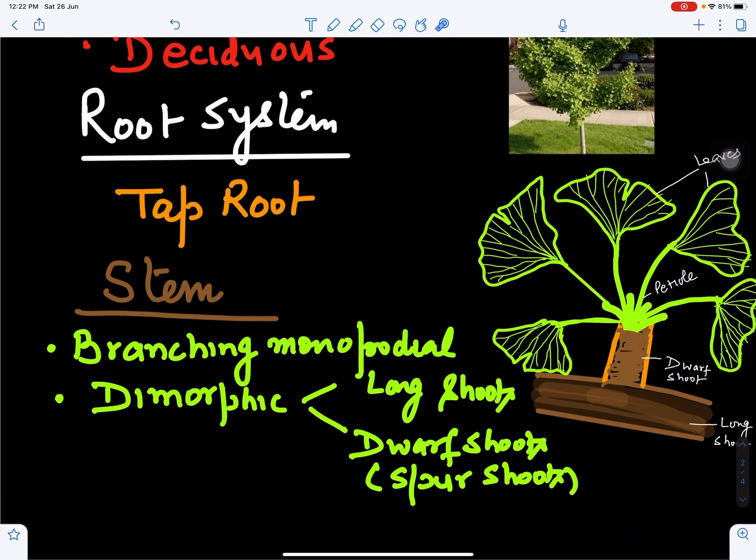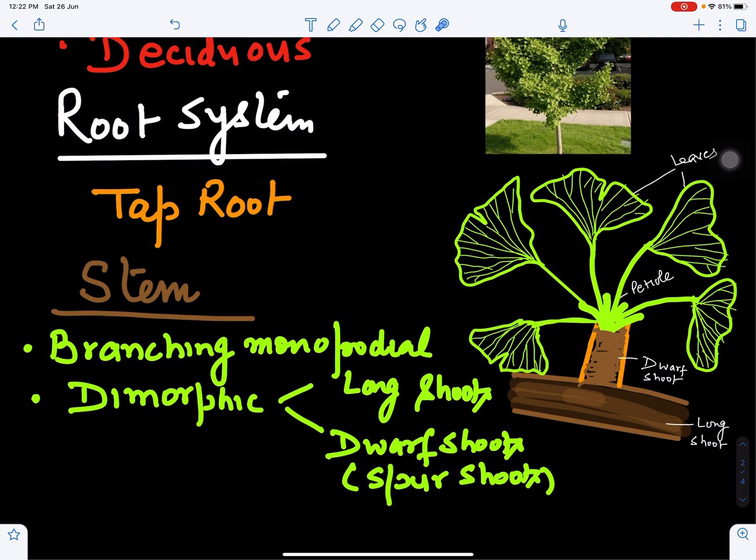The stem bears two kinds of branching. Branching is monopodial; it grows only by single growing point and is of two types: dimorphic long shoots and dwarf shoots. Long shoots have unlimited growth and dwarf shoots have limited growth. Here is the long shoot on which dwarf shoot is born and these are the leaves born on the dwarf shoot.